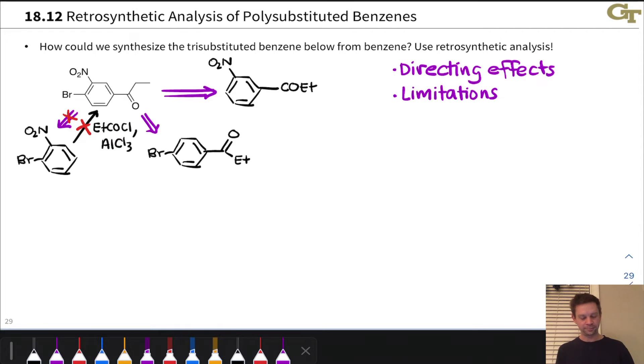What about bromination, which is this pathway here? What about installing the bromine in the last step? Here we run into problems with directing effects. Treatment of this with Br2 and AlCl3.